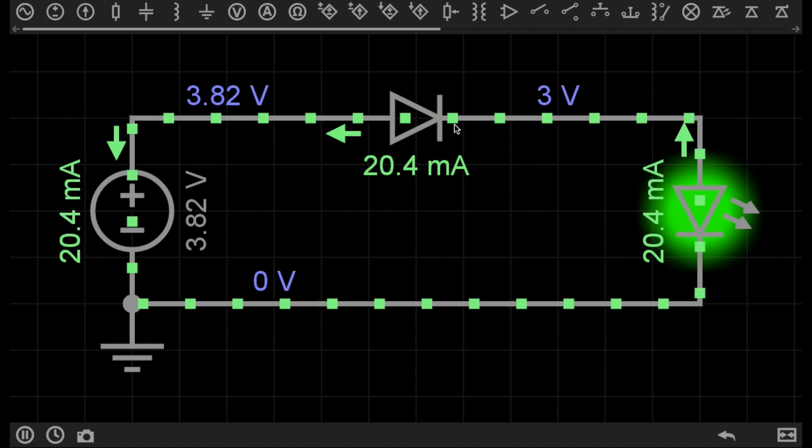In this example, I have the diode connected so that it allows current to flow through the circuit.